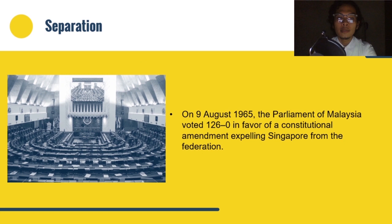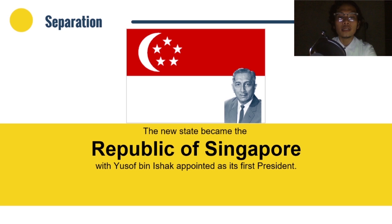Seeing no alternative to avoid further bloodshed and conflict, Malaysian Prime Minister Tunku Abdul Rahman decided to expel Singapore from the federation. On August 9, 1965, the Parliament of Malaysia voted 126 to 0 in favor of a constitutional amendment expelling Singapore. The new state became the Republic of Singapore, with Yusuf bin Ishak appointed as its first President.